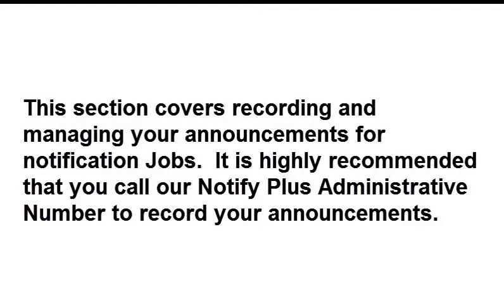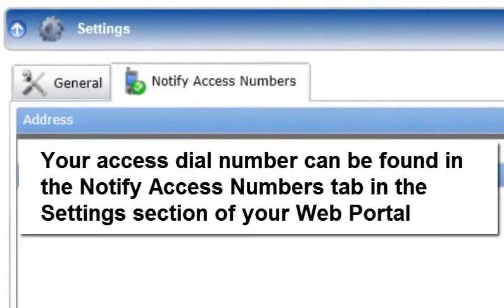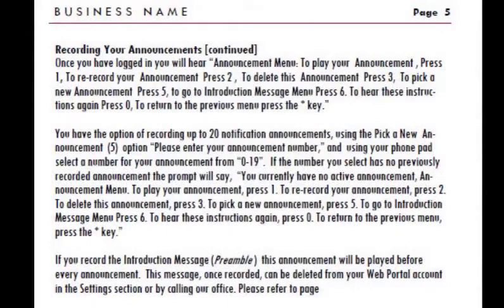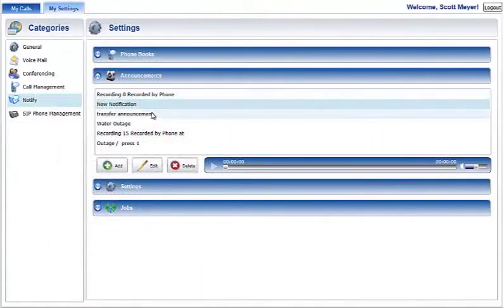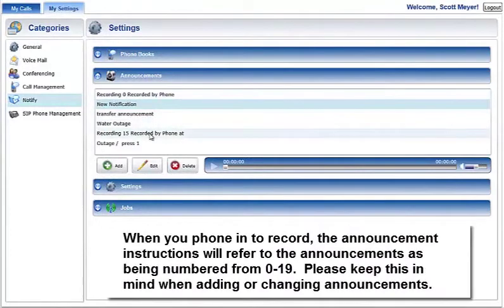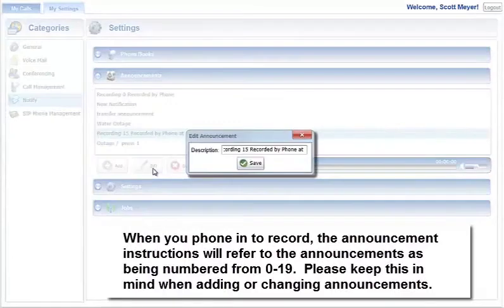The Announcements section is used to manage the announcement audio files that are available to be played for notification calls. The easiest way to record announcements is by calling the Notify Plus administration number and following the audio prompt directions for recording new announcements. For further information, please refer to page 5 of the User Guide document for instructions on navigating the phone administration menu. Please contact our office if you need a copy of this User Guide. The service allows for up to 20 announcements, numbered 0 through 19. Once recorded, you can access them from the web portal and use the Edit button to rename them.